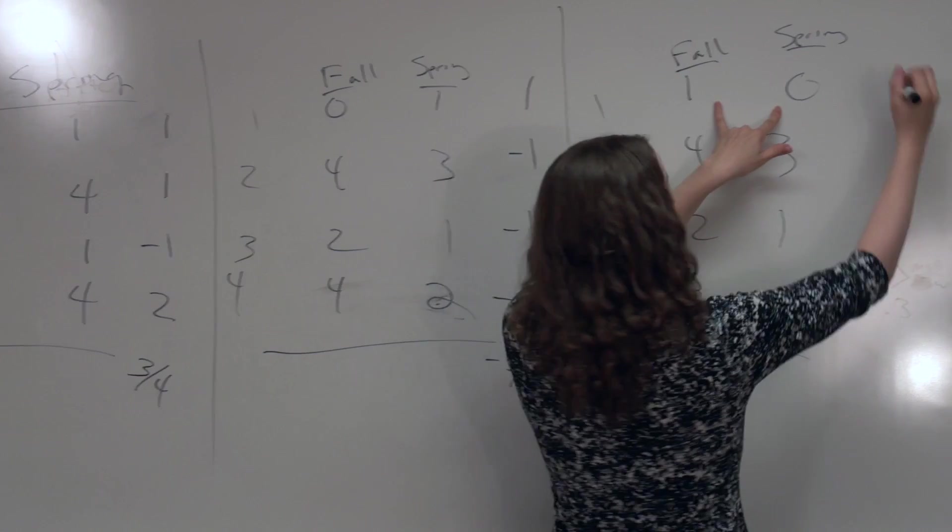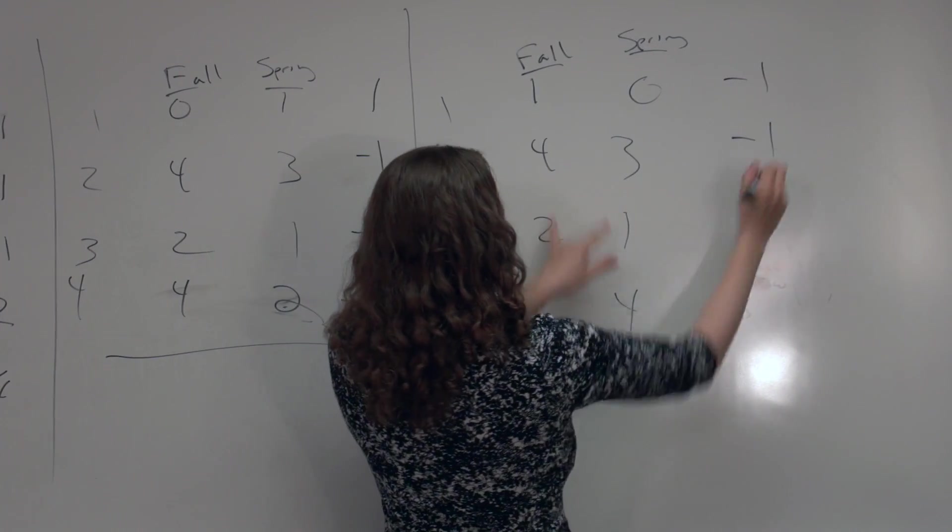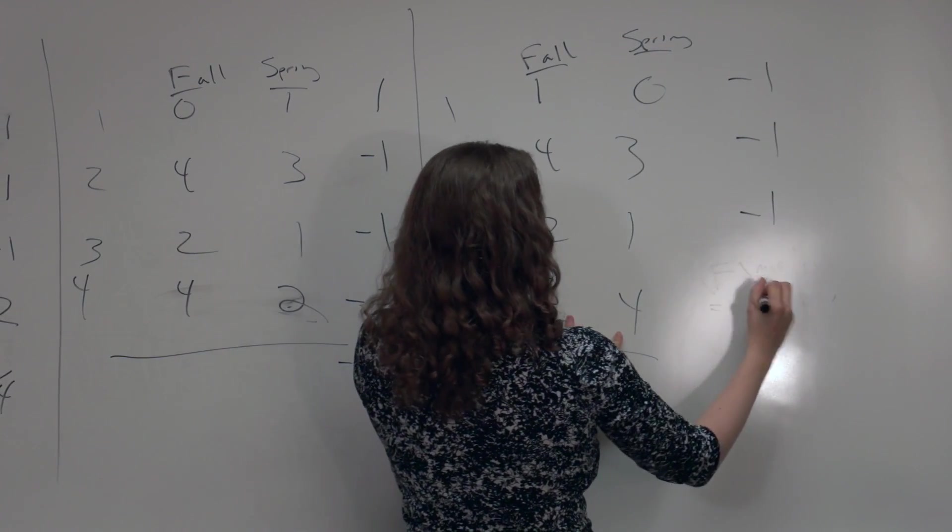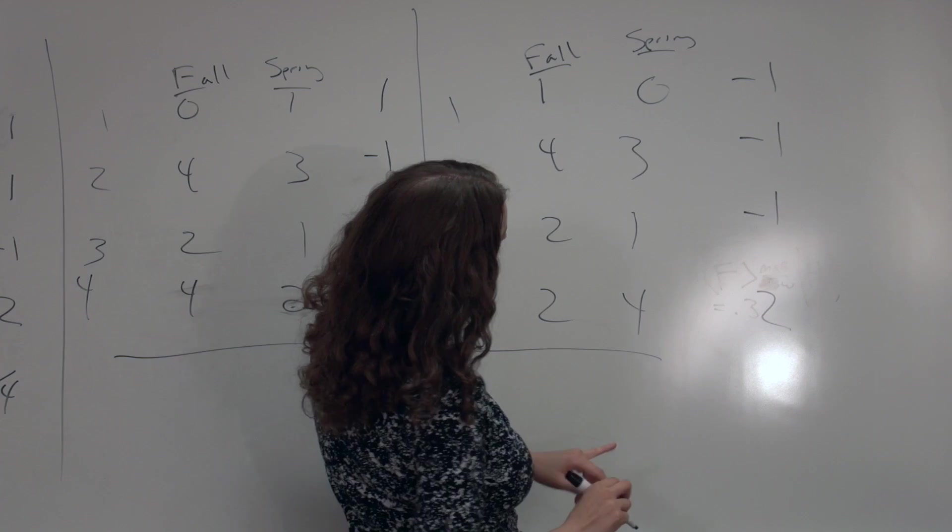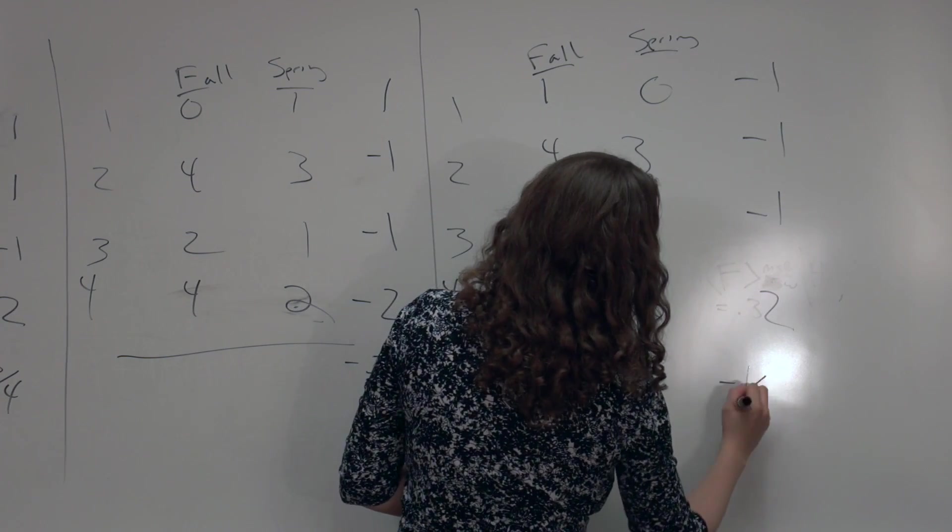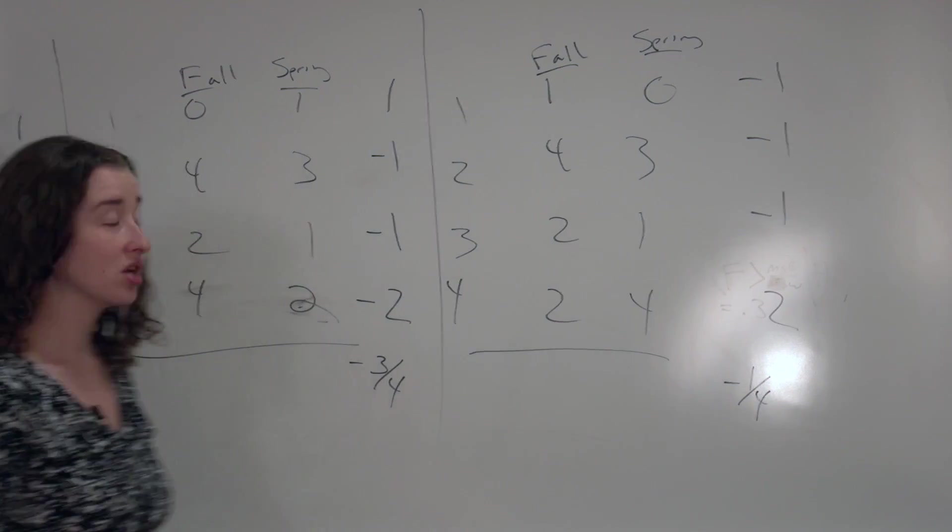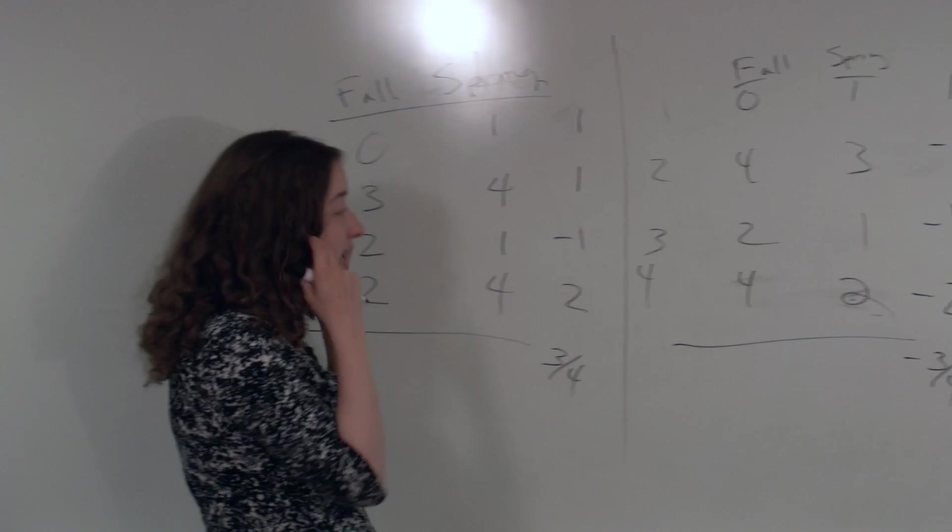And if I do the same thing over here, I've got 0 minus 1 is negative 1, 3 minus 4 is negative 1, negative 1, and 2. So I've got negative 1 out of 4 as my average.